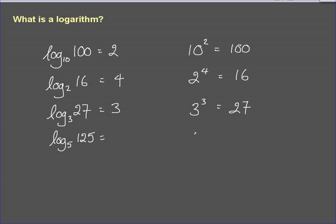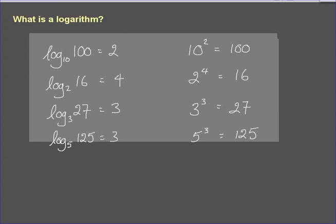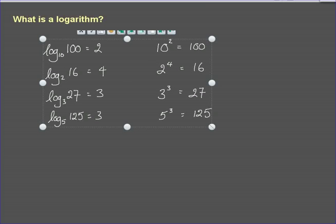What power of 5 gives the answer 125? The answer is 3. And so logarithms in this way can be seen very easily as indices.